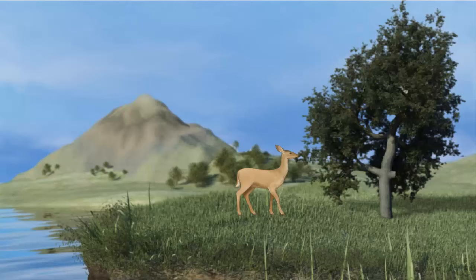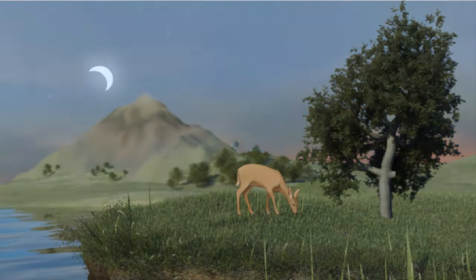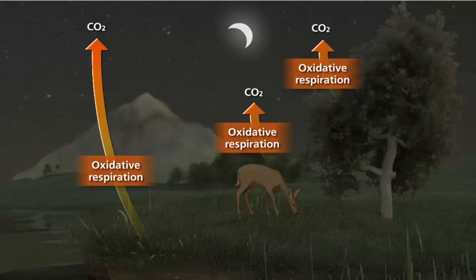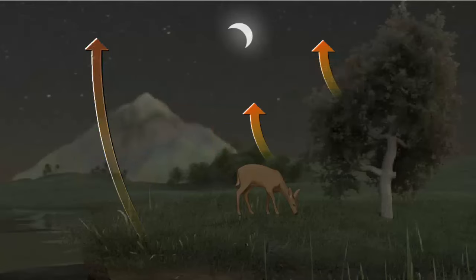Through the same process of oxidative respiration, plants also release carbon dioxide into the atmosphere. This occurs predominantly at night when they are not using carbon dioxide for photosynthesis.